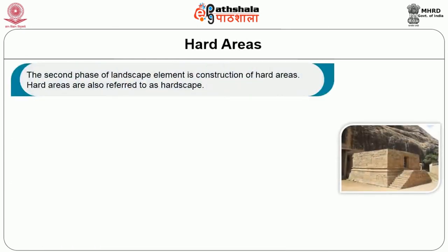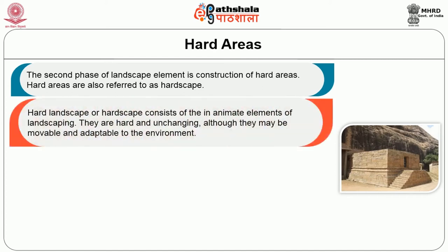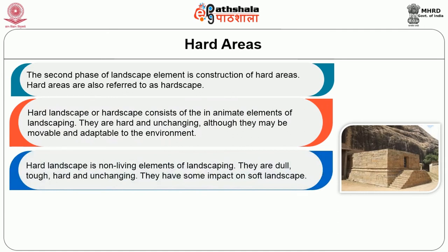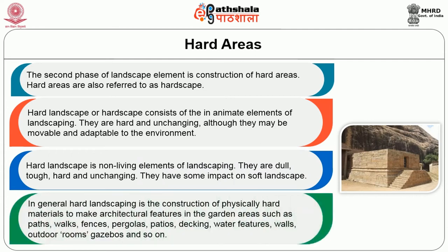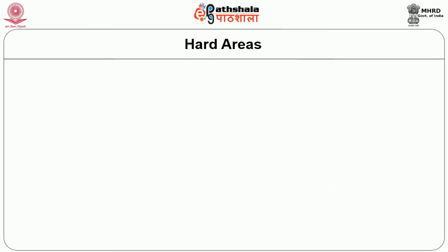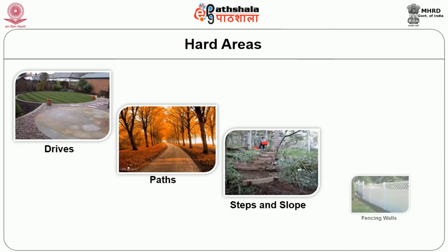The second phase of landscape elements is the construction of hard areas. Hard areas are also referred to as hardscape. Hardscape consists of inanimate elements of landscaping; they are hard and unchanging although they may be movable or adaptable to the environment. Hard landscape is the non-living element of landscaping — dull, tough, hard and unchanging, but they have an impact on soft landscape. In general, hard landscaping is the construction of physically hard material to make architectural features in the garden area such as paths, walks, fences, pergolas, patios, decking, water features, walls, outdoor rooms, and so on. The most important elements involved in hard areas are drives, paths, steps and slopes, and fencing walls.